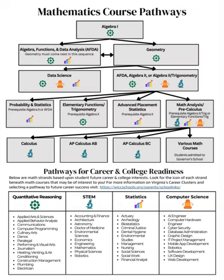Students can take Data Science or AFTA, Algebra 2, or Algebra 2 Trig after successfully completing Geometry. Data Science can be taken either before or after taking AFTA, Algebra 2, or Algebra 2 Trig. AFTA, Algebra 2, and Algebra 2 Trig are all courses that cover varied levels of Algebra 2 content. We will discuss the details and prerequisites for each of these courses later in this video.